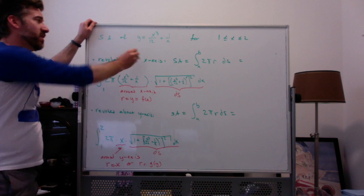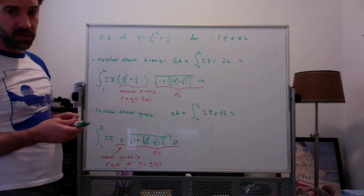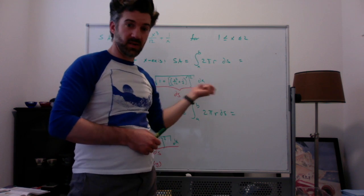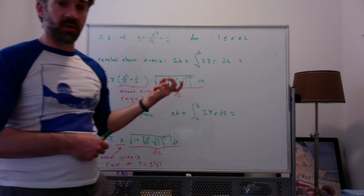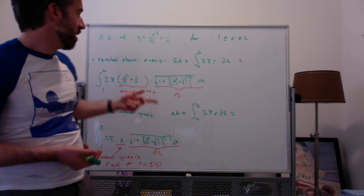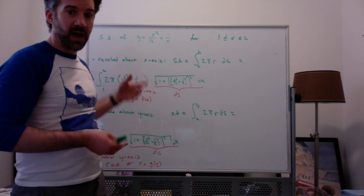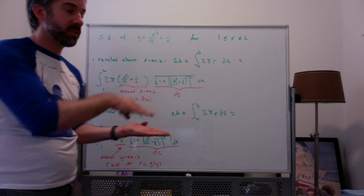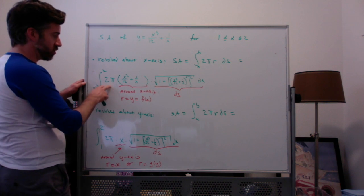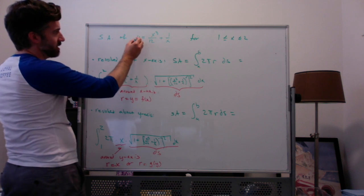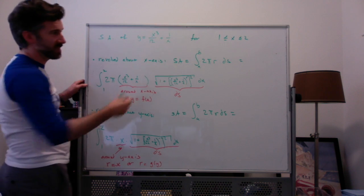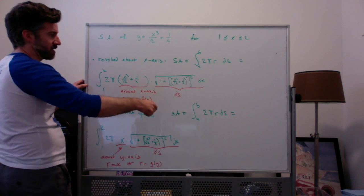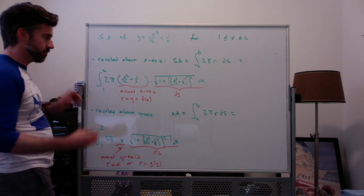When you revolve around the x-axis — or any axis really — the surface area is the integral of 2 pi r times ds. The ds is still that square root expression. The radius r is how far away we are from the axis of rotation. Going around the x-axis, how far away we are is how high up we are, so the radius is the y value. I can write this as the integral of 2 pi times f of x times ds, which is the square root of all that.